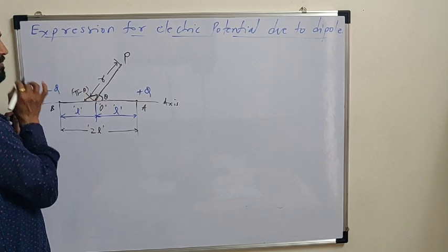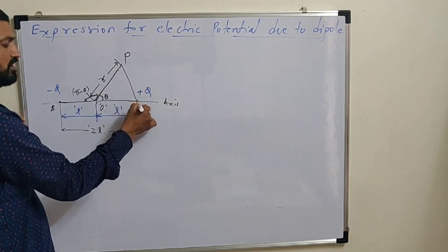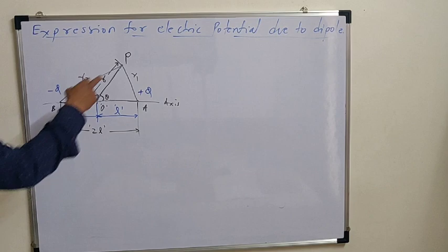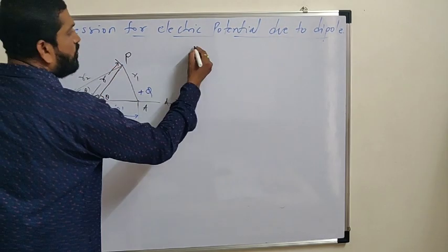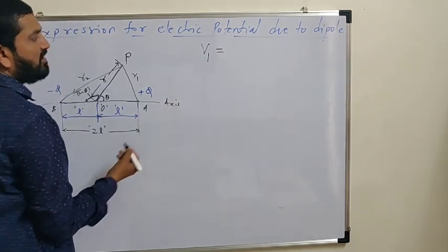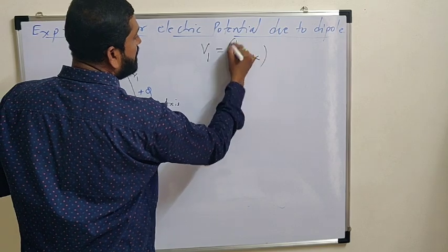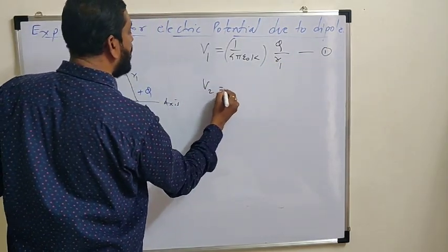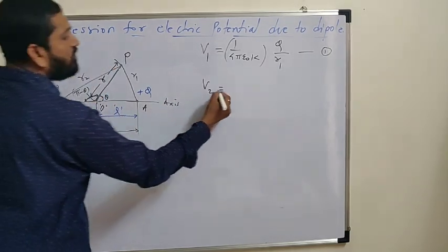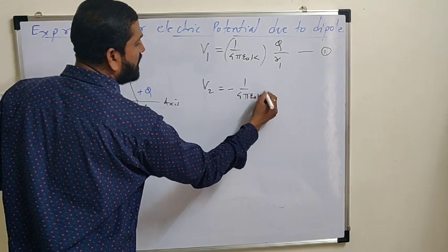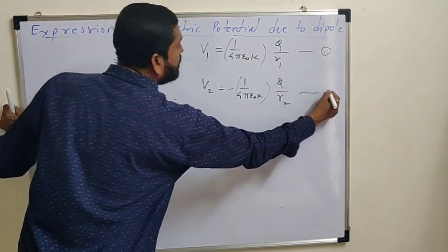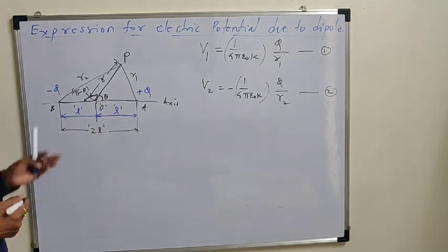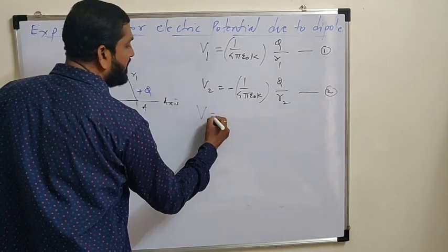Now we have to find potential at this point P. The potential due to first charge, if dipole is of the charge, the positive, then potential is V1 = (1/4πε₀)(Q/R1). Equation number 1. Similarly V2, the potential due to second charge. If dipole is of the other charge, the negative, then the potential is minus. The potential is V2 = -(1/4πε₀)(Q/R2). Equation number 2. Very important. The total potential due to a system of charges. So the dipole is the two charges. The total potential at that point is V1 + V2.